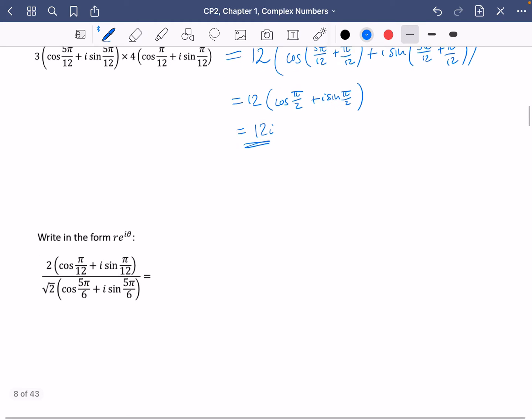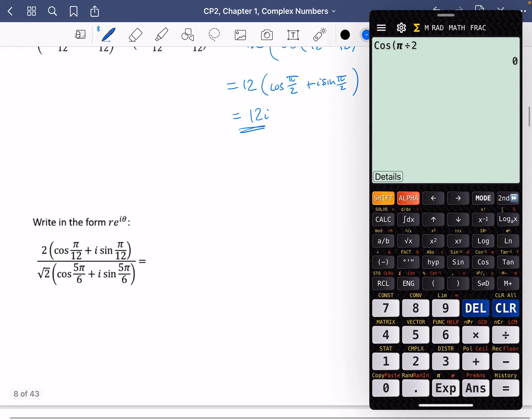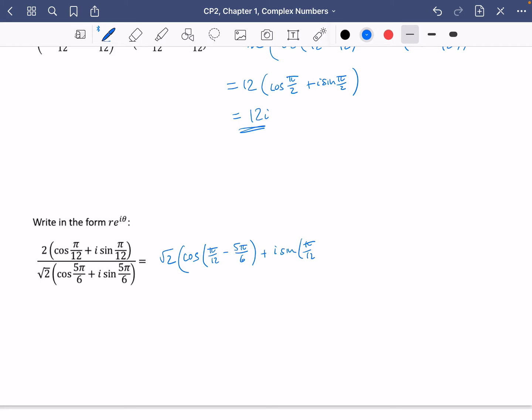So this one we want to write in the form R e to the i theta. Well, we've identified what the values of R are going to be. So we have 2 divided by root 2. I don't know why I'm doing this in the calculator. It's obviously going to be root 2 is the answer. And then we've got the arguments. So this time, the argument for cosine would be pi over 12 subtract 5 pi over 6 because of the division. And it's going to be the same for sine, which is just going to be pi over 12 minus 5 pi over 6.